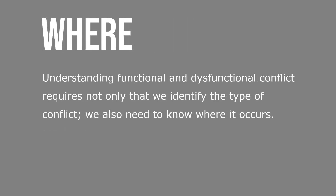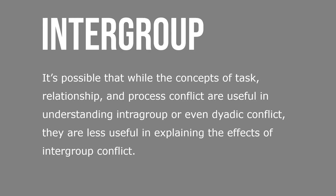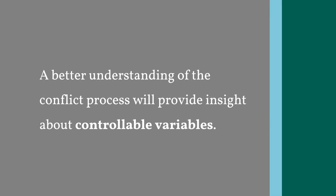Understanding functional and dysfunctional conflict requires not only that we identify the type of conflict — we also need to know where it occurs. It's possible that the concepts of task, relationship, and process conflict are useful in understanding intragroup or even dyadic conflict, but they're less useful in explaining the effects of intergroup conflict. A better understanding of the conflict process will provide insight about collaborative and controllable variables.